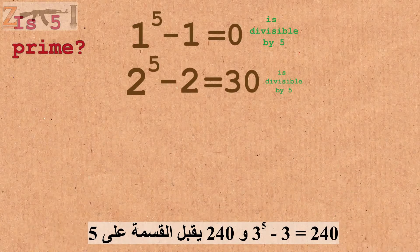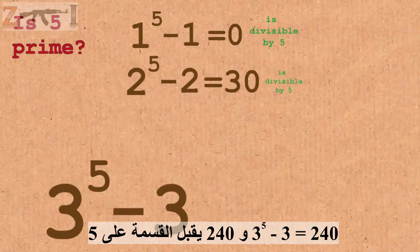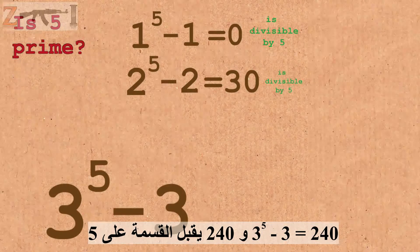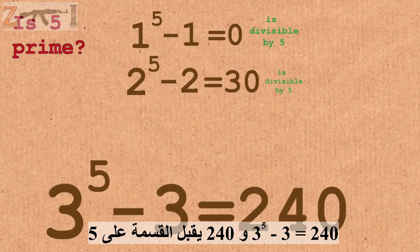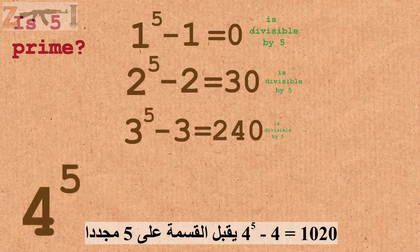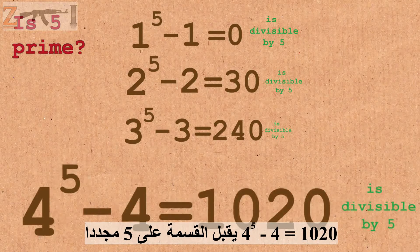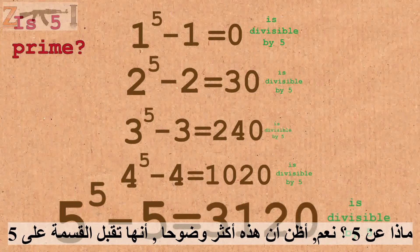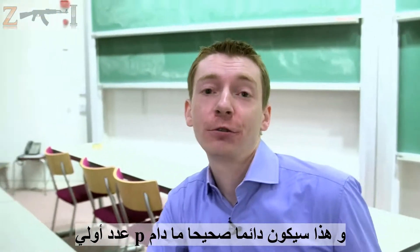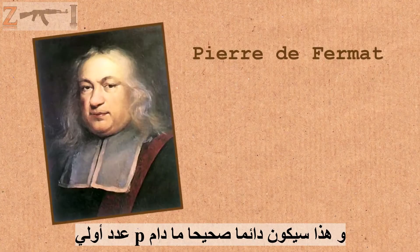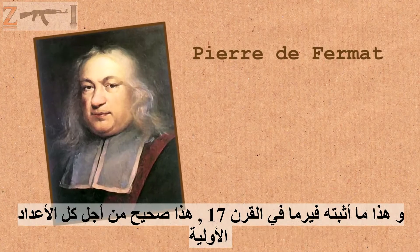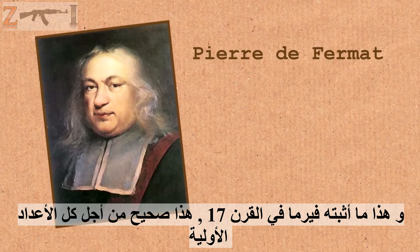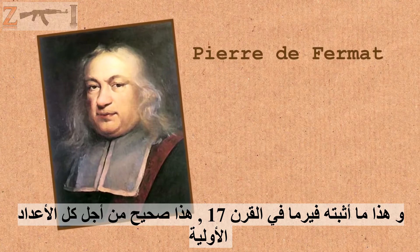Let's just finish it off. 3 to the power of 5 minus 3 is 240, so that's divisible by 5. 4 to the power of 5 minus 4 is divisible by 5 again. And 5 to the power of 5 minus 5 — well, that one's a bit more obvious — divisible by 5 too. This is what Fermat proved in the 17th century: absolutely true for all primes.